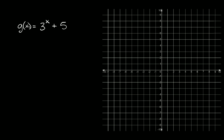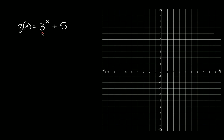Let's start with this one. G of x is equal to three raised to the x plus five. This number right here — whatever is attached to the exponent, the x — will generally tell you if your graph is exponential growth or decay. If this number is bigger than one, you're going to have a graph that's exponential growth. And if this number is somewhere between zero and one, you're going to have exponential decay. That's generally going to hold true unless there's a reflection.